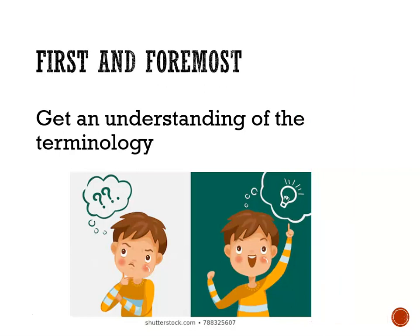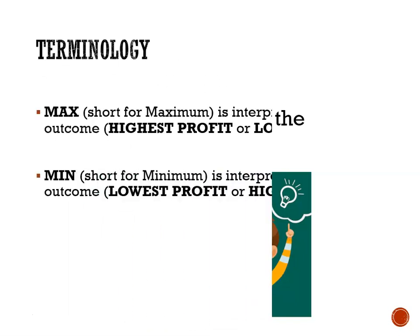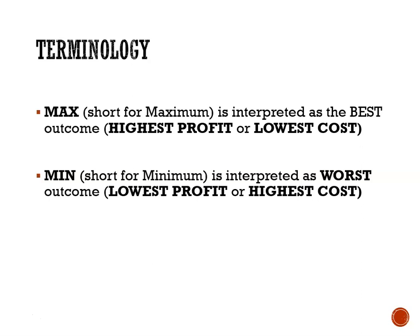The first thing we need to understand in decision theory is the terminology: max versus min. Max is short for maximum, and we interpret maximum as being the best outcome — either the highest profit or the lowest cost. Min is short for minimum, and we interpret min as the worst outcome — earning the lowest profit or incurring the highest cost.